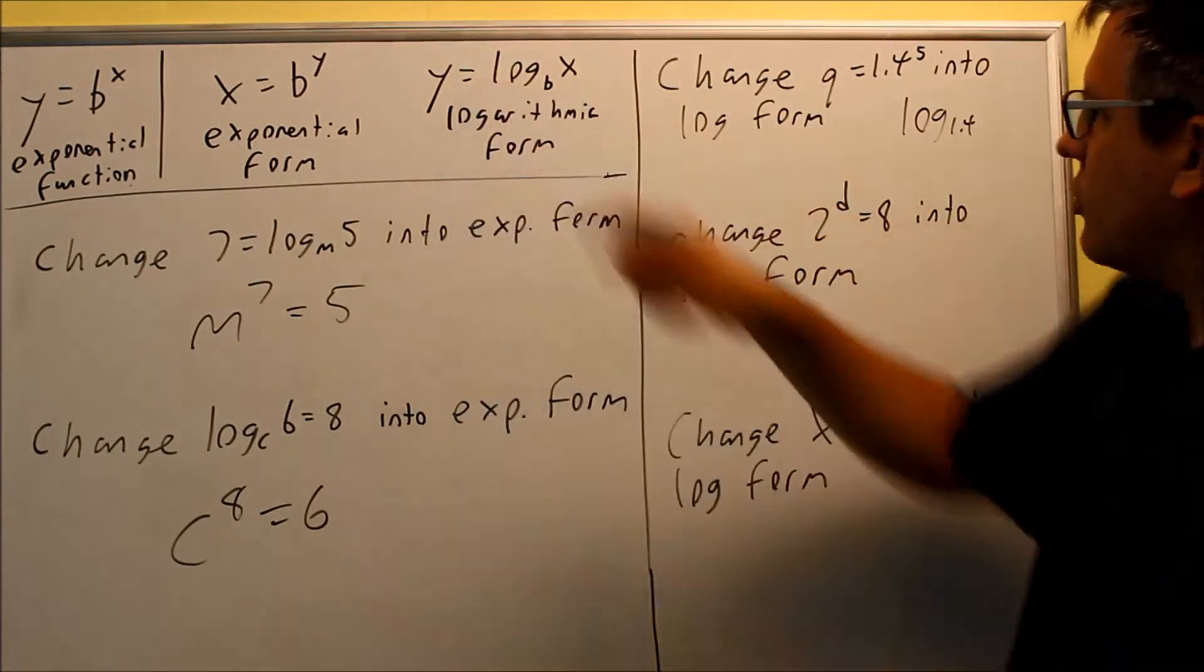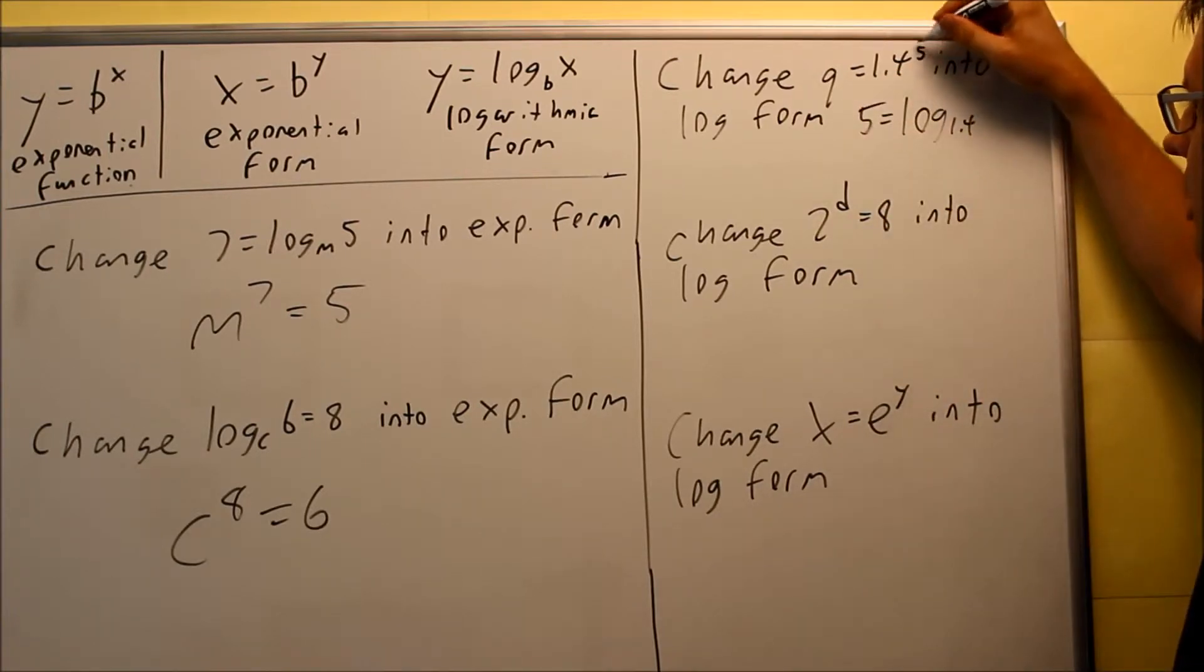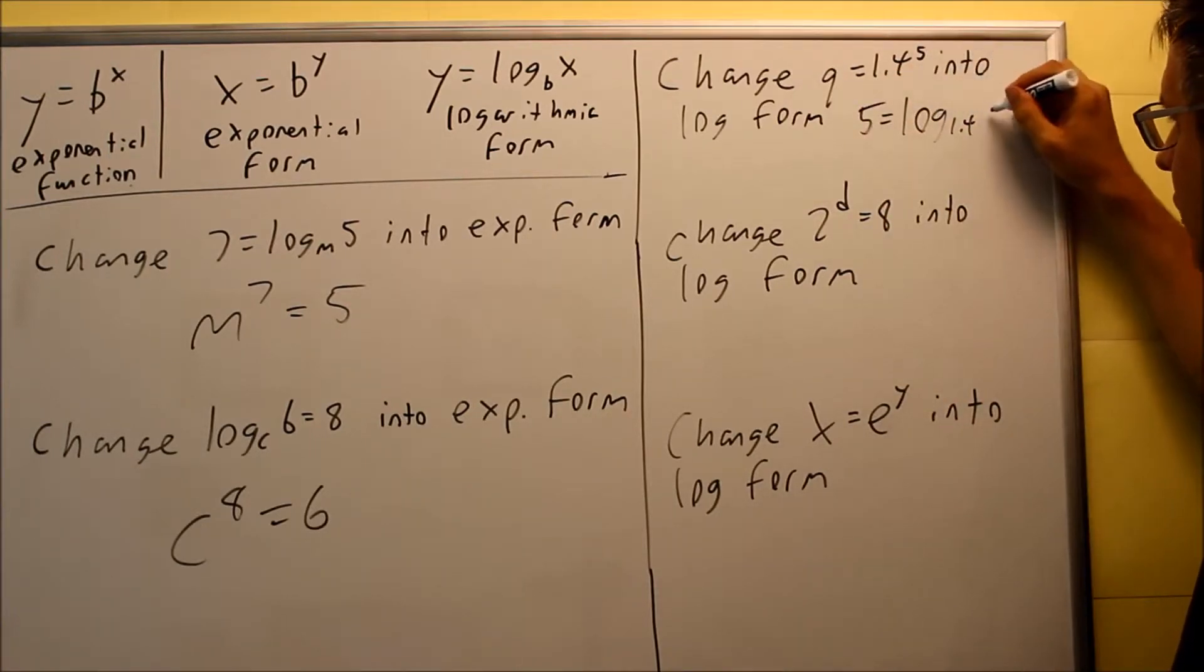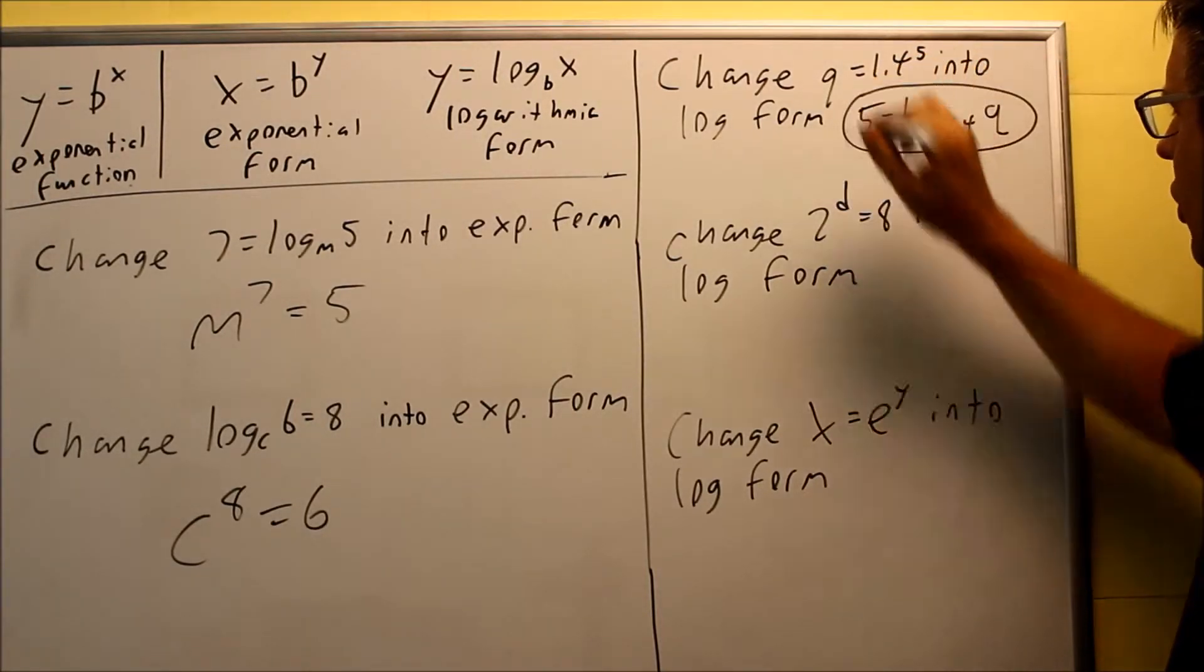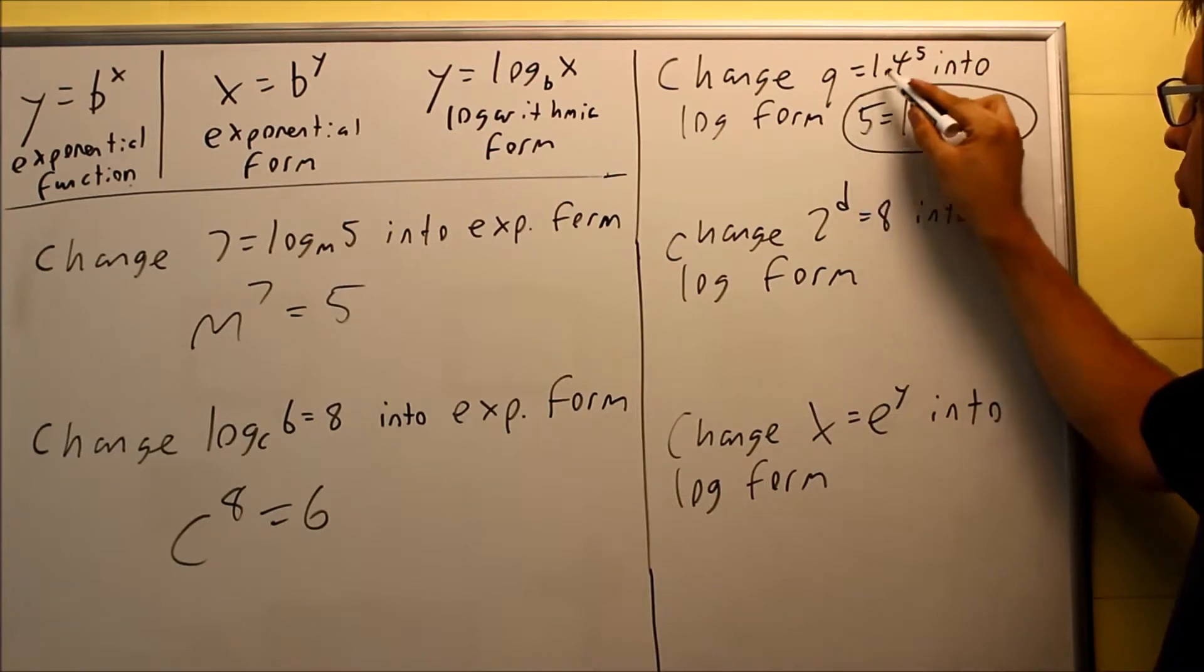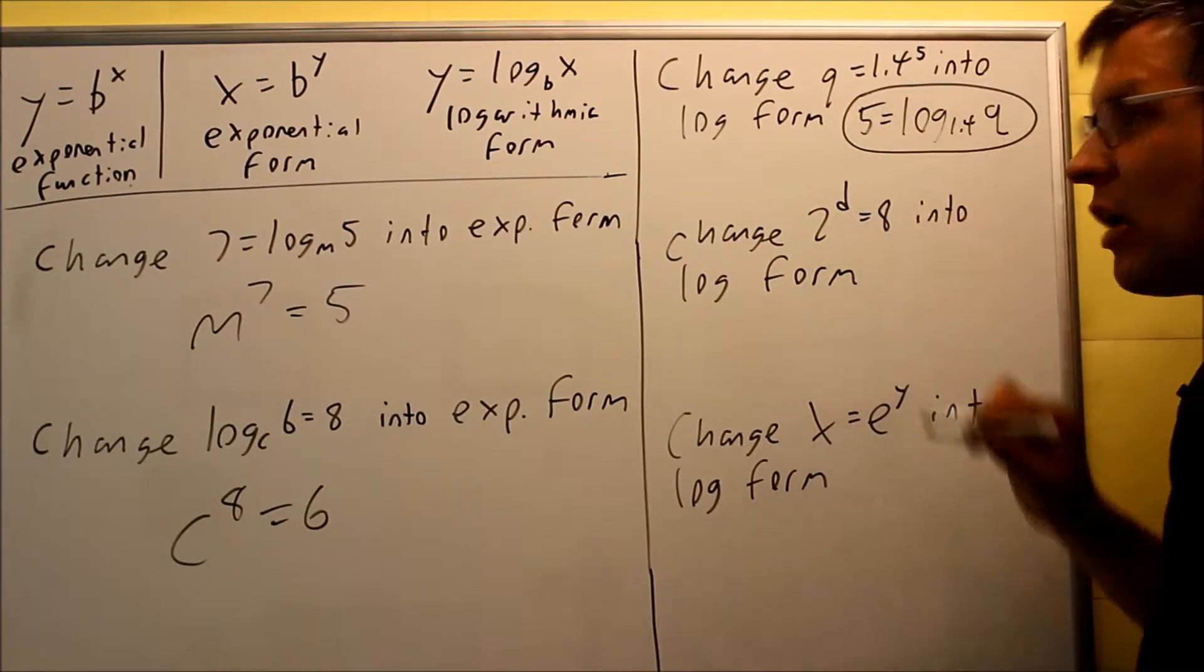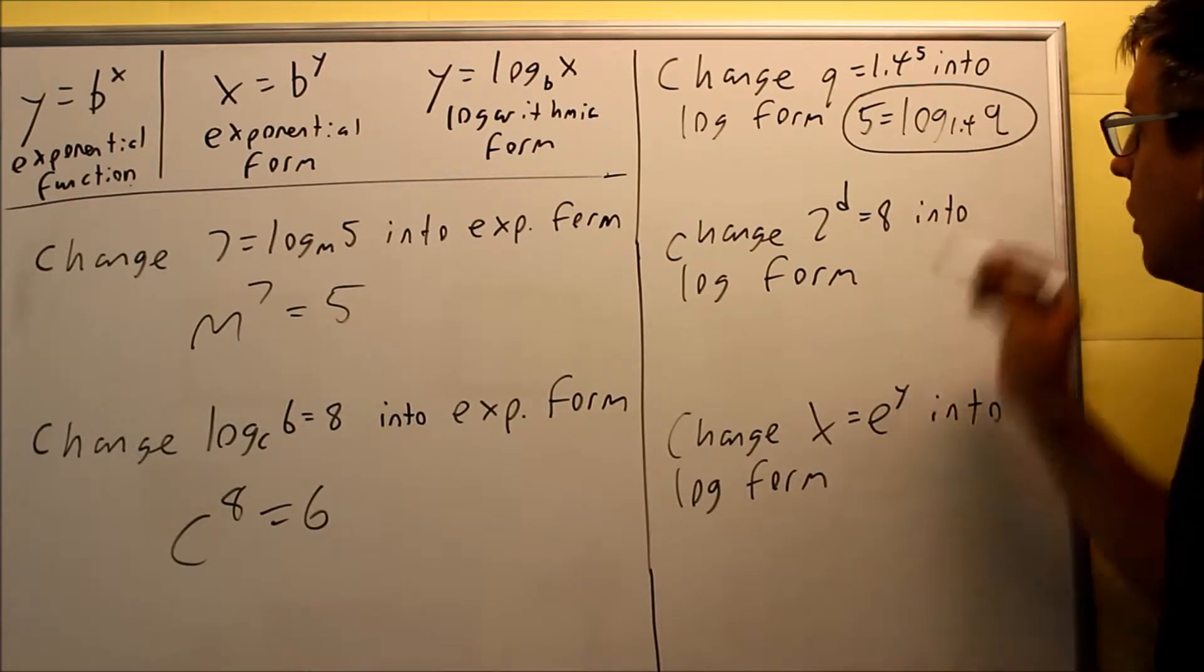Then what you do is you're going to put an equal sign, and I'm going to put a 5, because 5 is going to be the exponent that's here. And then whatever's left over is q. So therefore, this circled one, that would actually be the answer. If I want to take q equals 1.4 to the fifth, this is how I would write it out as a log. 5 equals log base 1.4 of q.